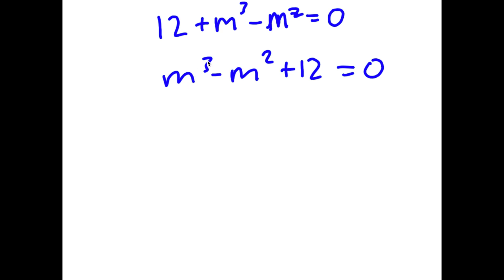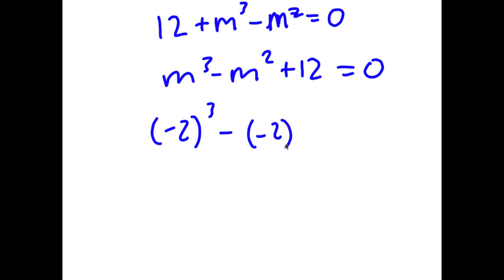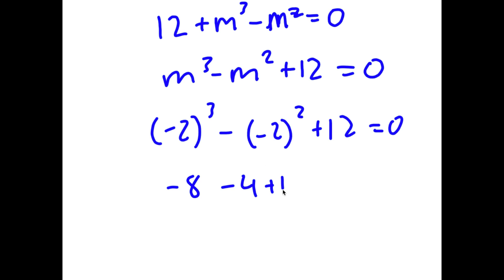If we plug in 2, we have 2 to the power of 3, which is 8. 8 minus 4 is 4. 4 plus 12 is 16. 16 does not equal 0. But negative 2: I have negative 2 to the power of 3 minus negative 2 squared plus 12 is equal to 0. Negative 2 to the power of 3 is negative 8, and negative 2 squared is 4. So I have negative 8 minus 4 is negative 12. Negative 12 plus 12 equals 0, meaning negative 2 is a solution.